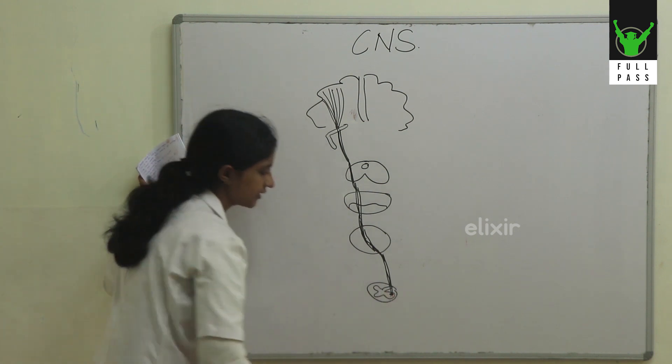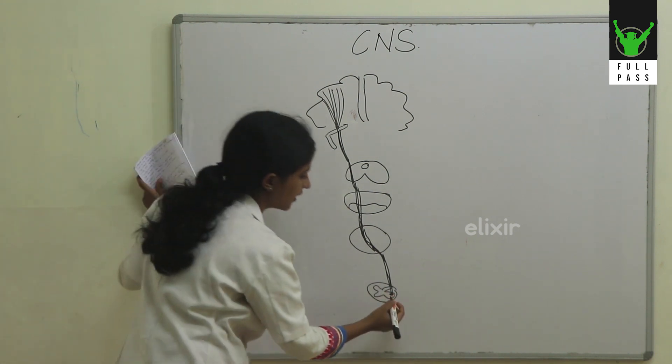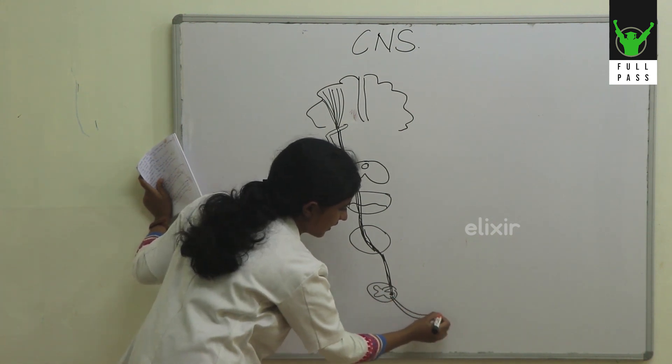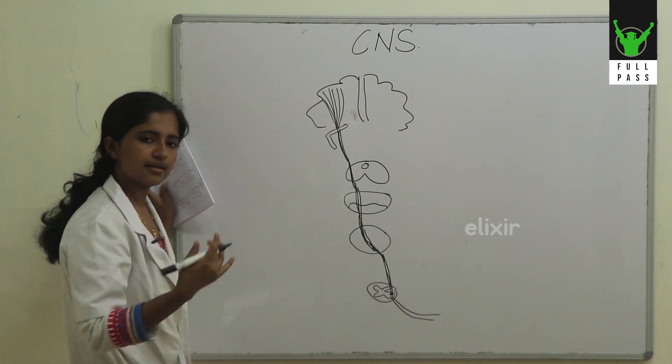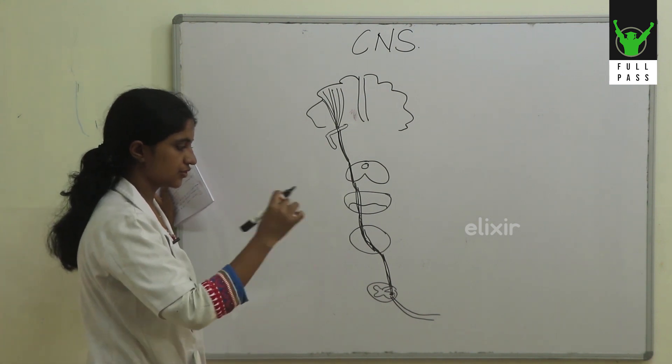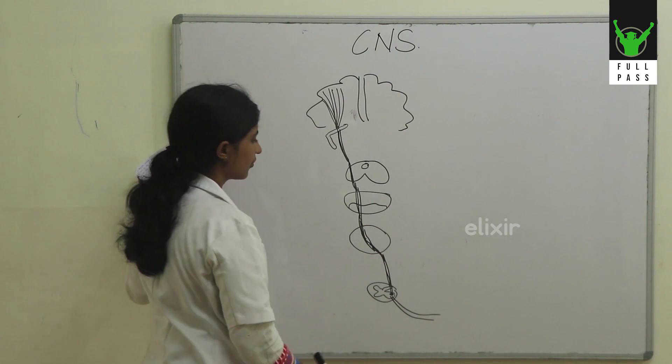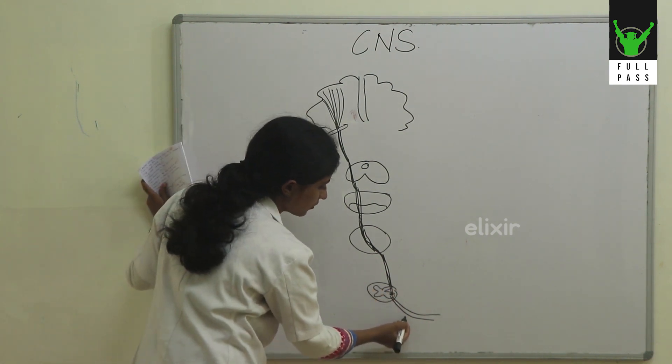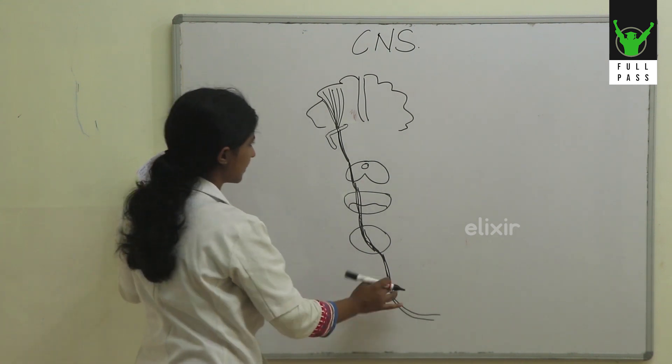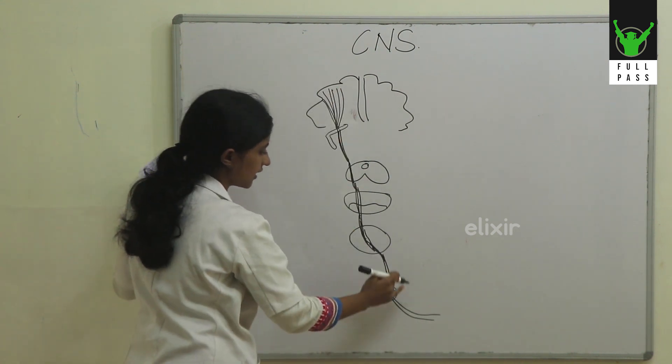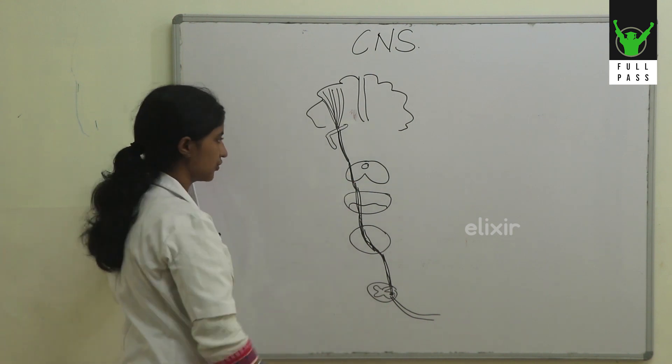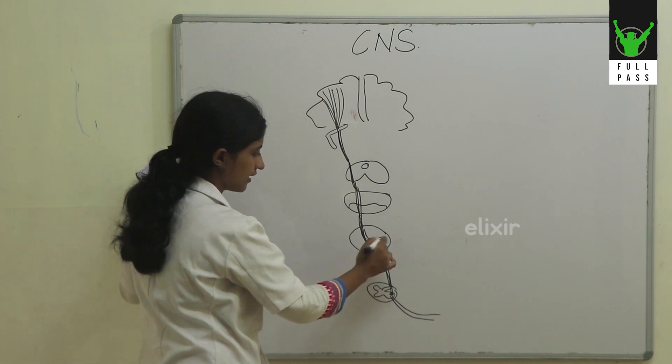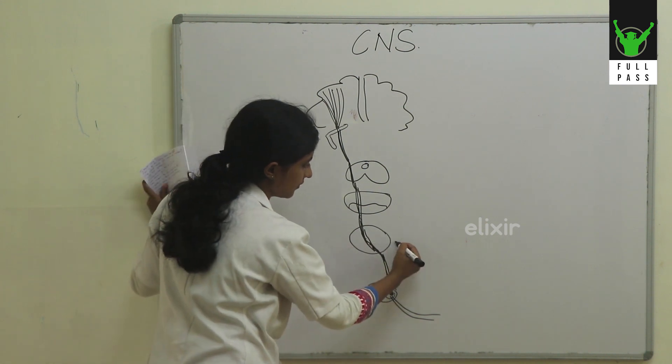They end in the anterior horn of the spinal cord, and from there the lower motor neurons start, which go as nerves to supply each muscle of our body. From the anterior horn cells onwards, we have the lower motor neurons, and from cortex till here we have the upper motor neurons. We also have a crossing over at the level of medulla.